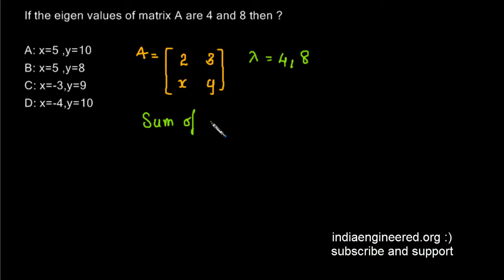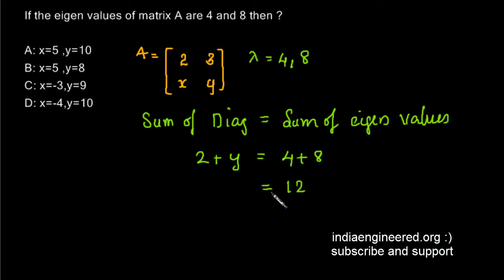We know that the sum of diagonal elements is equal to the sum of eigenvalues. By using this property we will get 2 plus y equal to 4 plus 8, that is equal to 12. That means y will be equal to 10.